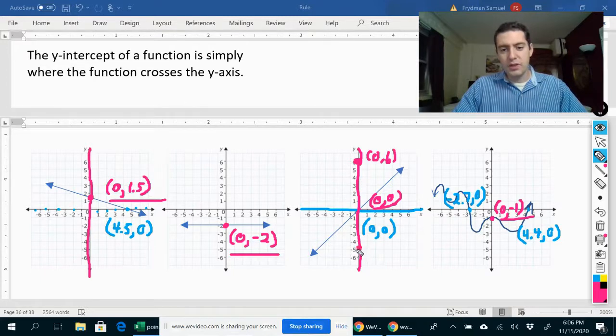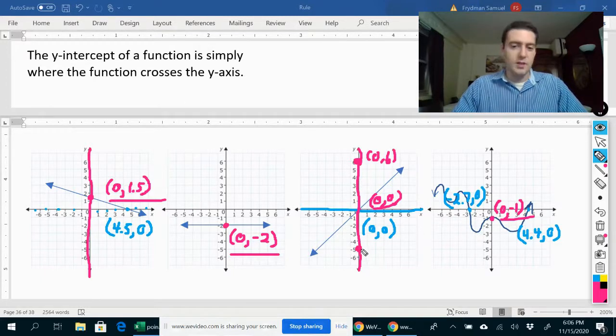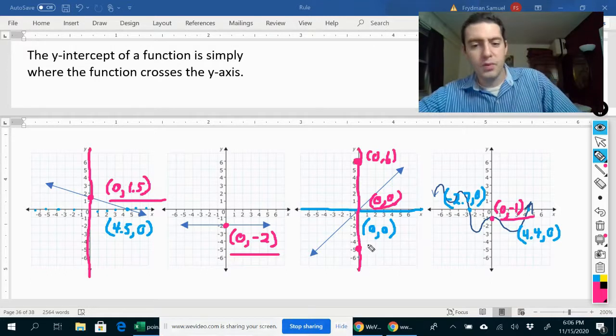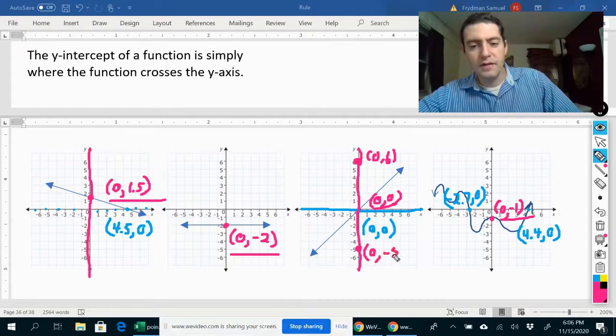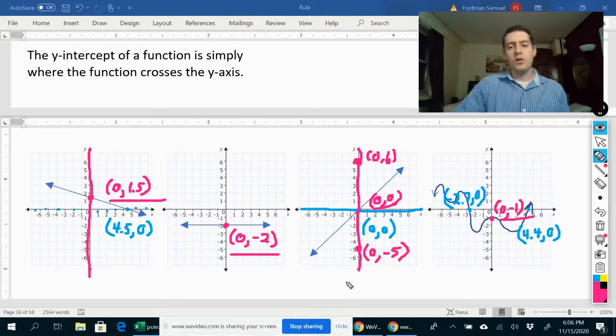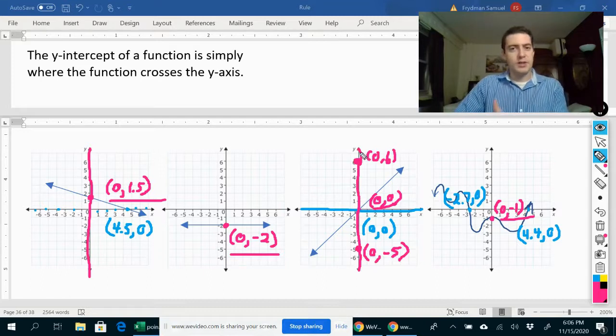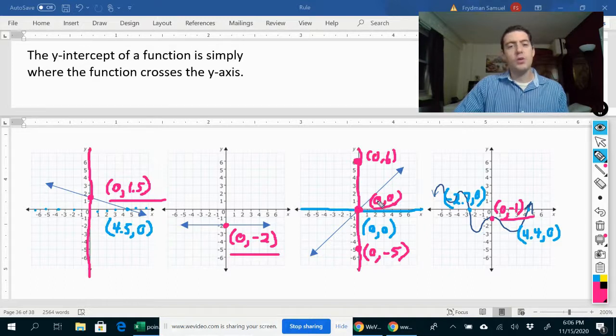Okay, what is this point over here? Again, this is not the y-intercept, but just another example. This is the point zero, negative five. So everywhere along the y-axis, the x-value is zero, including at the y-intercept. So your first number is always going to be zero for the y-intercept.